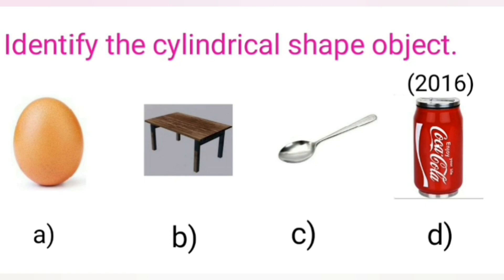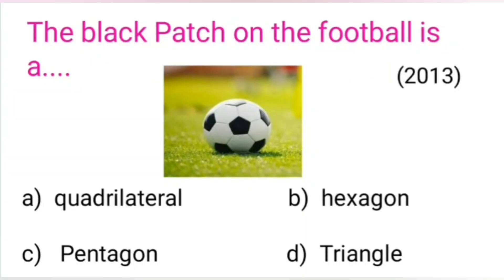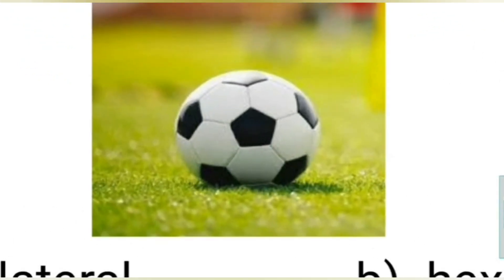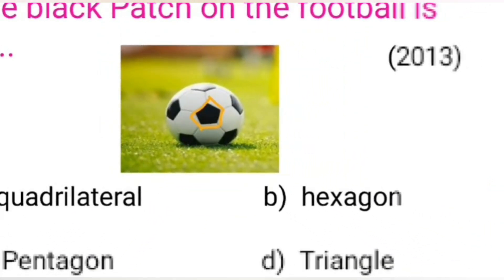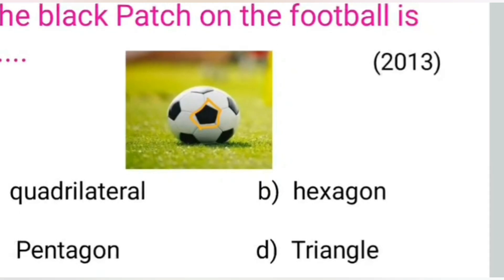Identify the cylindrical shape object — when we see option D, we get a cylindrical shape. The black patch on the football — let's count the sides: 1, 2, 3, 4, 5 — five sides means it is a pentagon.